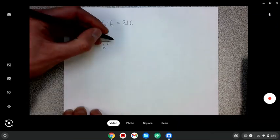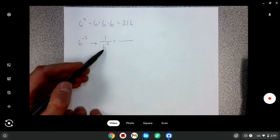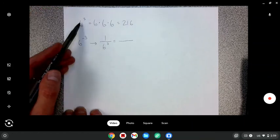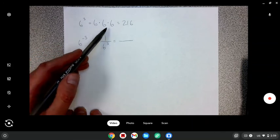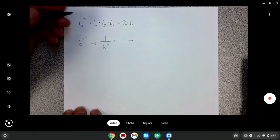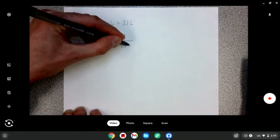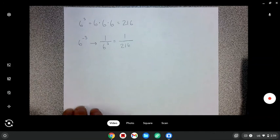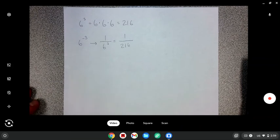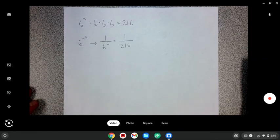Now that we've done that, six to the third power with a positive exponent, that I can handle. Six times six times six is 216. So six to the negative third power is one over 216. That's what six to the negative third power is. It's a fraction.